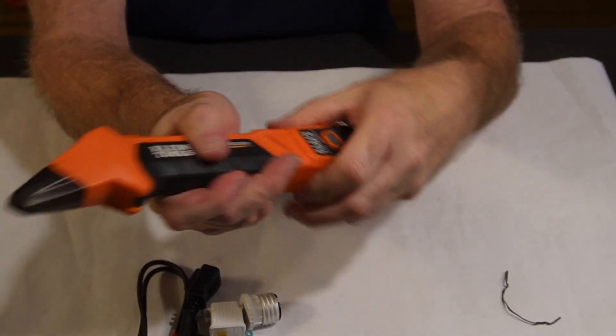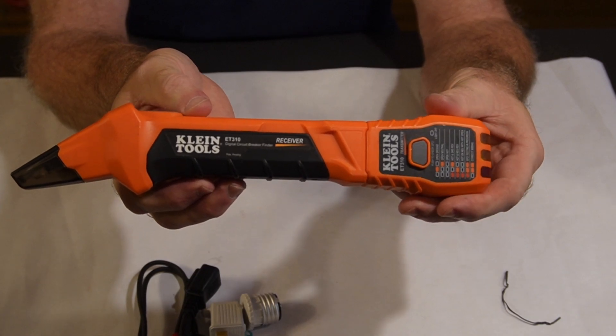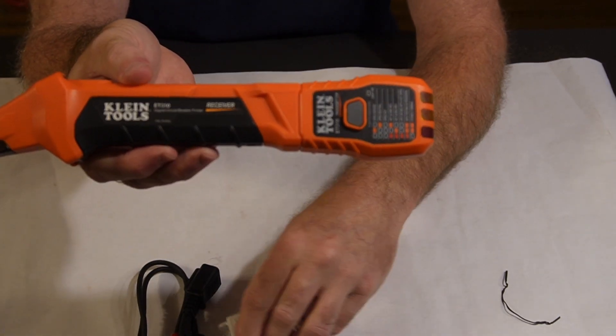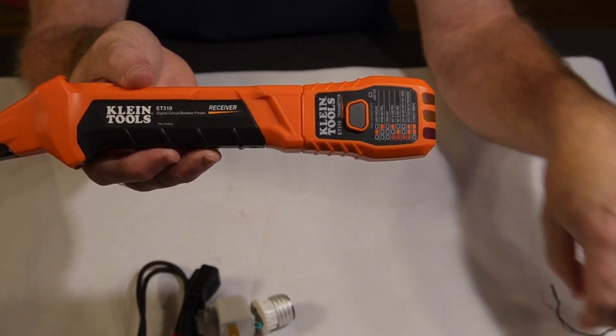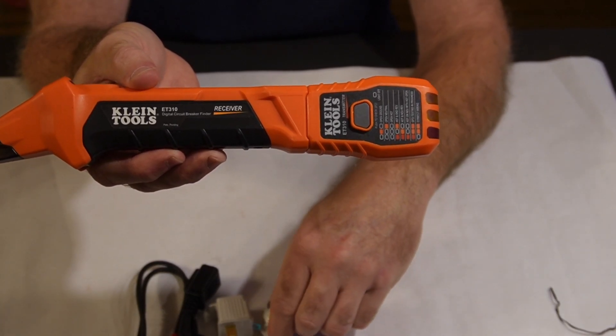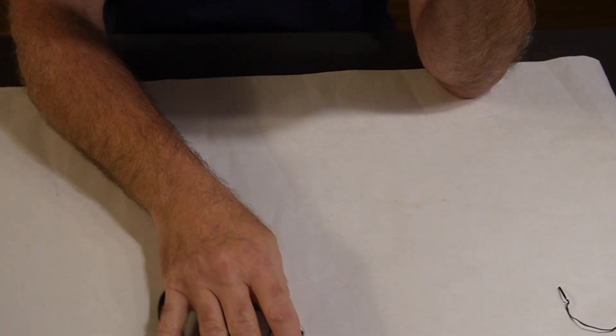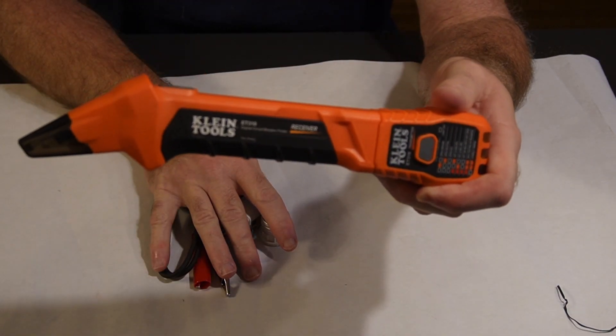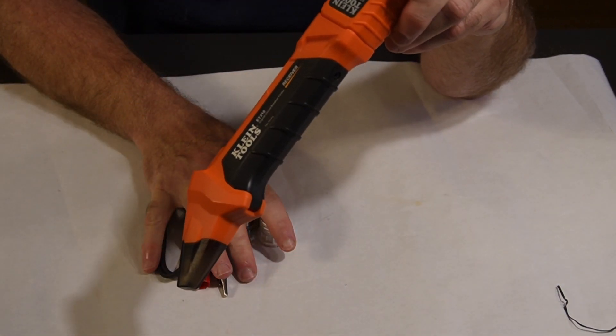So if you are doing electrical work in older buildings especially, but any building where the circuits are not labeled particularly well, having these extra items to go along with the main tool is a big help.